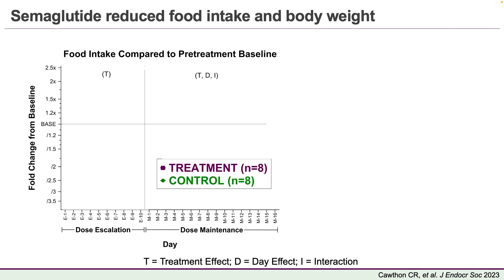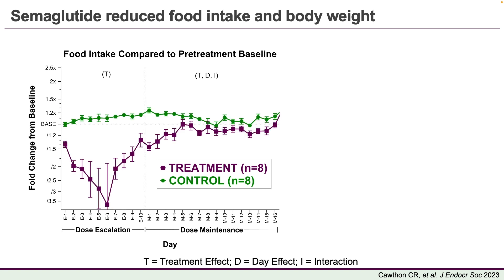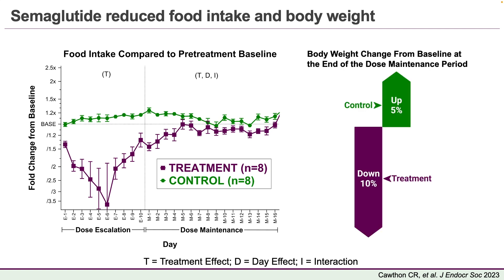So we're going to look at food intake. And as you might expect, the rats that got semaglutide ate less. And over the course of the experiment, they ended up being about 15% lighter than the control rats, which is in line with human results.